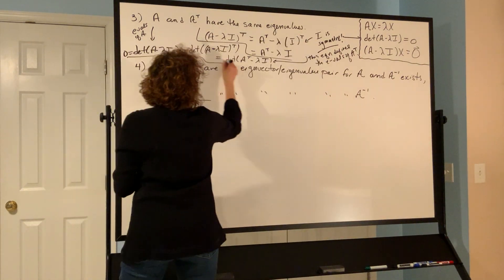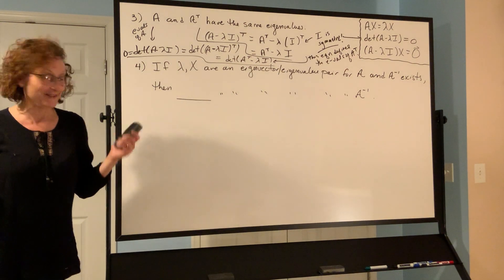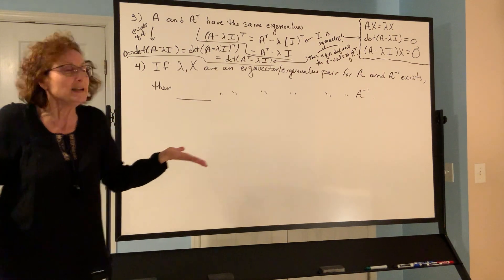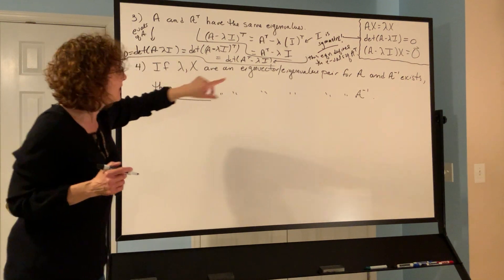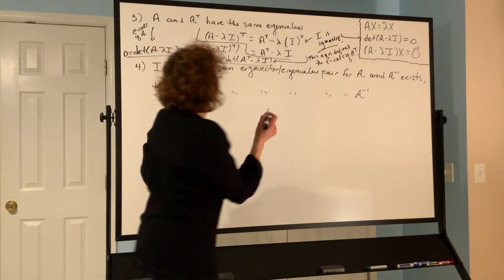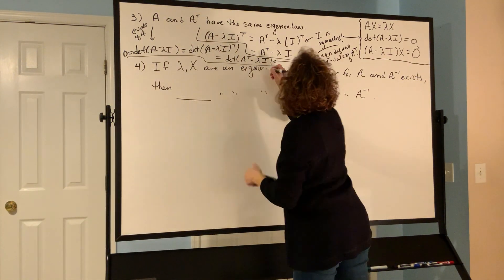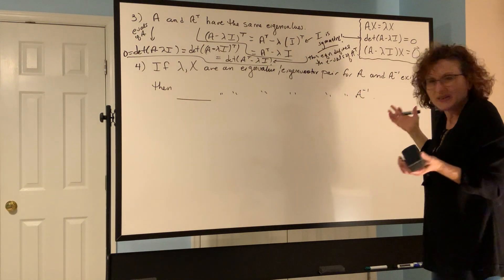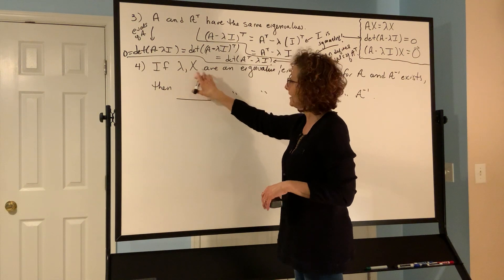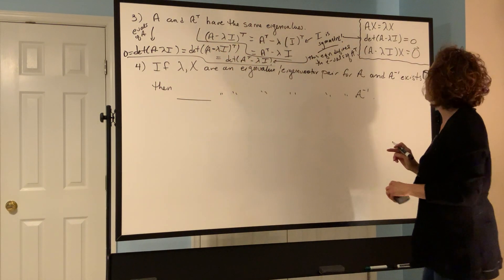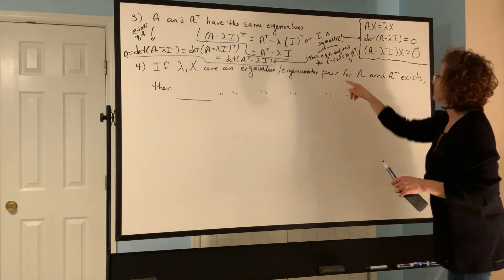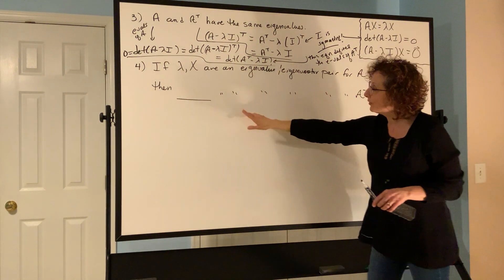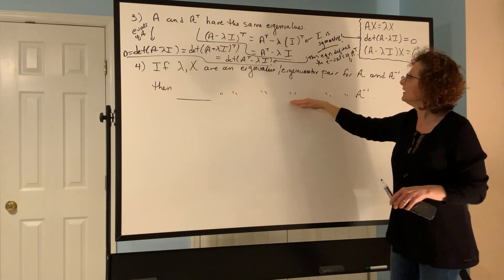Next result: if lambda and x are an eigenvalue-eigenvector pair for A and A-inverse exists, what is an eigenvalue-eigenvector pair for A-inverse? We're going to figure this out. Since lambda and x are an eigenvalue-eigenvector pair for A, we're probably going to use the equation Ax equals lambda x because it's simpler and directly involves both the eigenvalue and eigenvector.